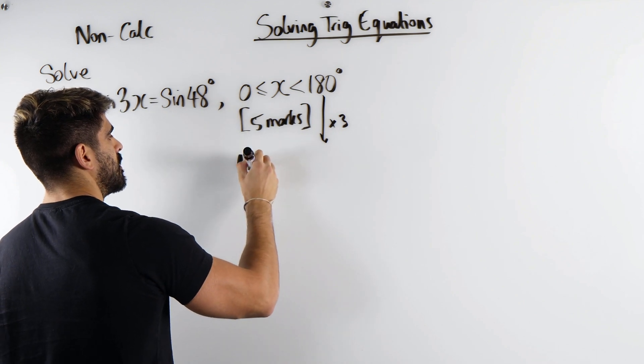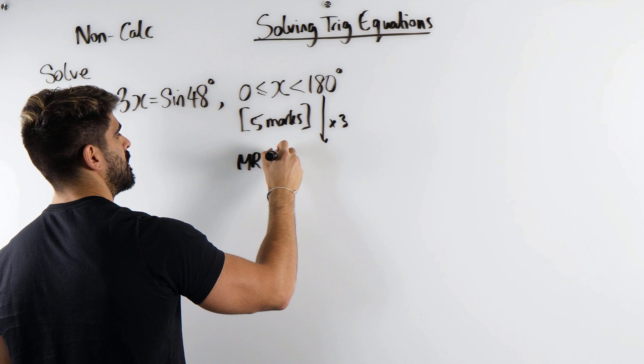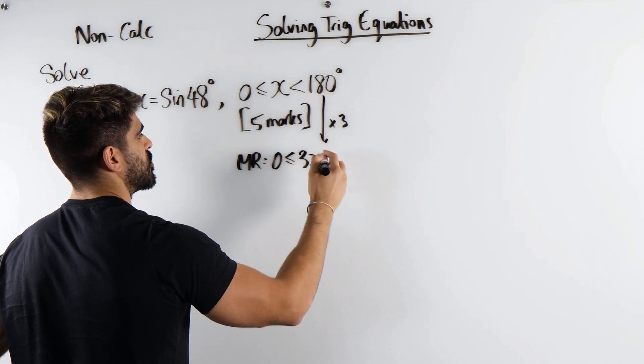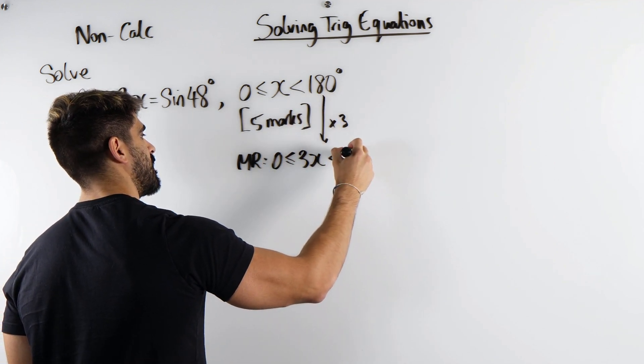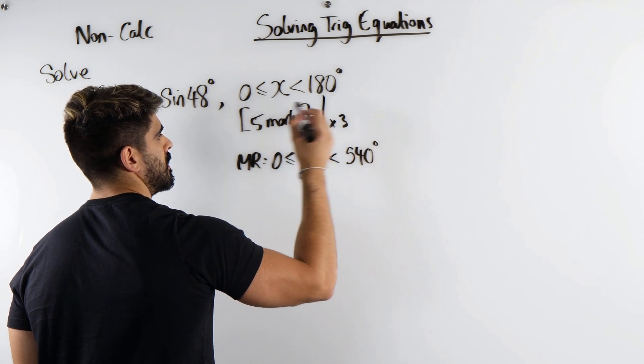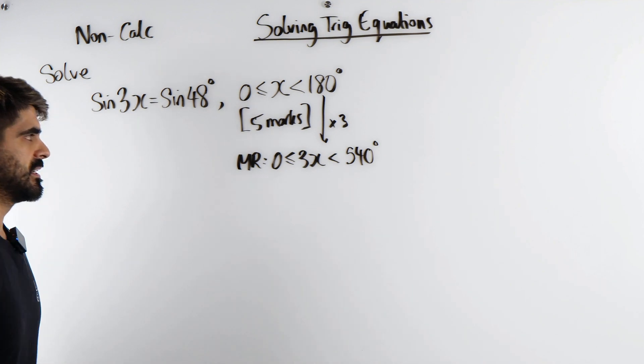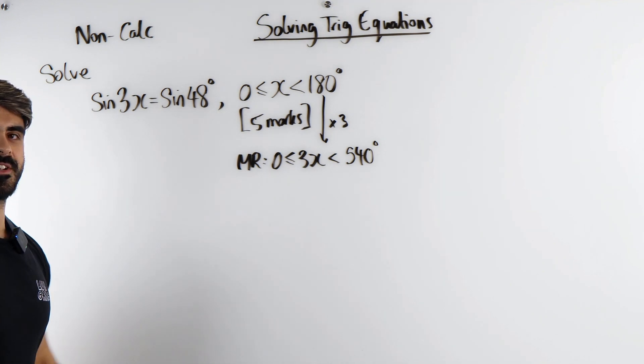We call that the modified range. So we'll have 0 ≤ 3x ≤ 540. 180 times by 3 is 540. 18 times 3 is 54, and then just add a 0.